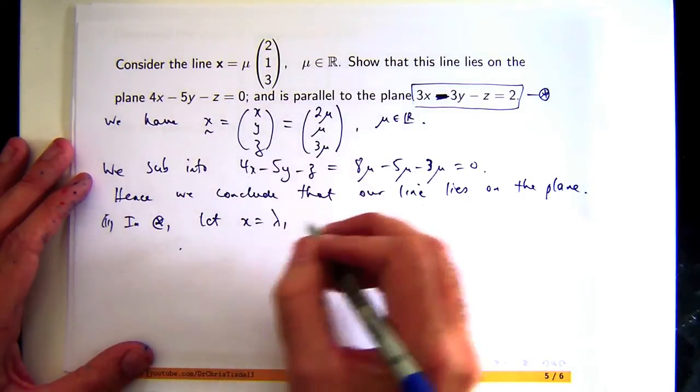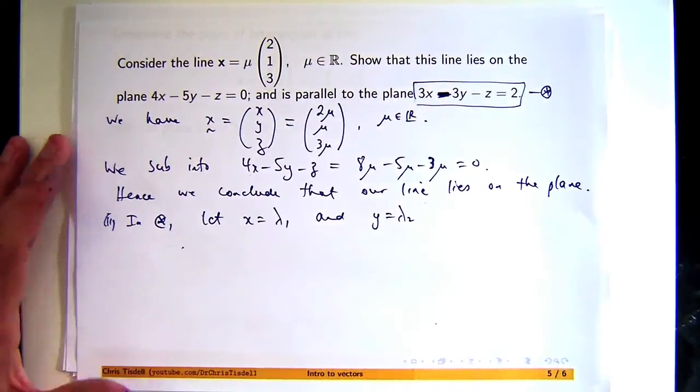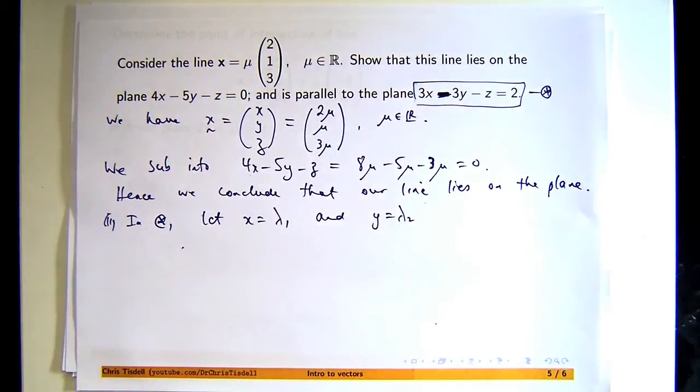Say lambda 1, x equals lambda 1, and y equals lambda 2. They're two parameters, because I'm trying to get a parametric vector form. I need two parameters.